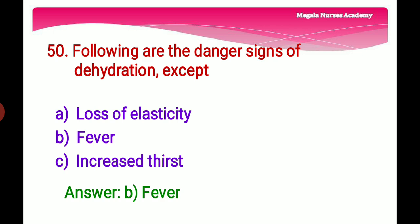Fiftieth question: Following are the danger signs of dehydration, except — Option A: Loss of elasticity, Option B: Fever, Option C: Increased thirst. The right answer is Option B, fever. Loss of elasticity and increased thirst are danger signs of dehydration, but fever is a sign of infection.